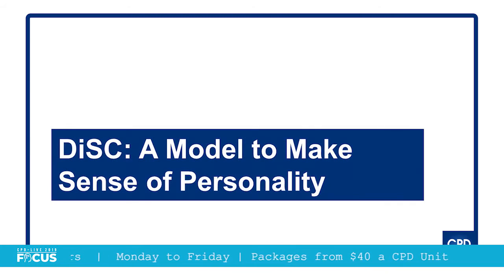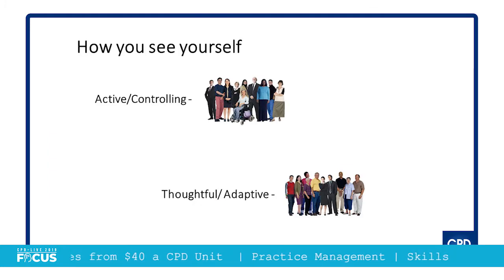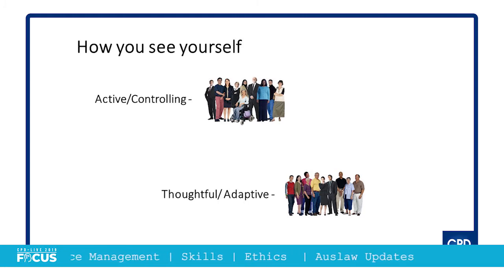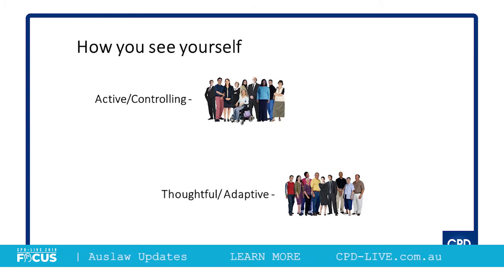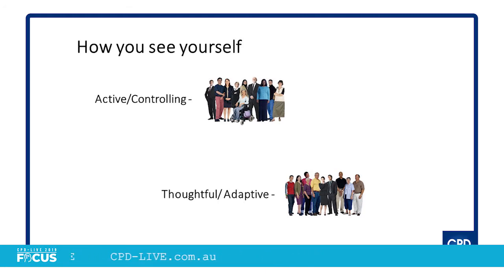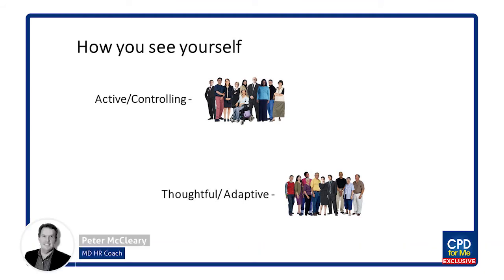We're using DISC. DISC effectively says the first part is how you see yourself: are you active or controlling, or are you thoughtful and adaptive? The people who are active or controlling are normally going to be taking control and action oriented. On the top or bottom of this model: thoughtful, thinking, adaptive. What adaptive means is often if someone wants to take control and I'm okay with where they're going, I'll just go with them.